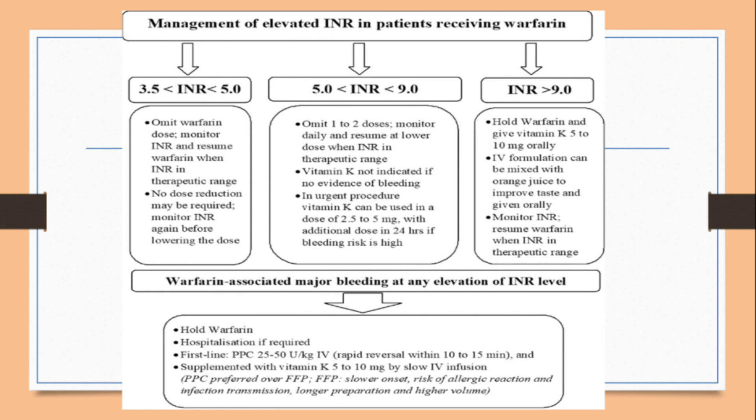If there is major bleeding and we want to reverse warfarin anticoagulation, we hold warfarin, give vitamin K, hospitalize the patient, and give the reversal agent — four-factor PCC (prothrombin complex concentrate, also known as human prothrombin complex) at 25–50 units per kg IV over 10–15 minutes. If PCC is unavailable, we can use FFP. I will discuss the advantages of four-factor PCC over FFP later.